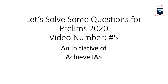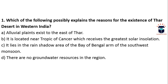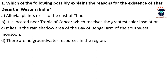Let's start the discussion. Today is video number five and we will be discussing geography questions. The first question is: which of the following possibly explains the reasons for the existence of the Thar Desert in western India? Options: A — alluvial plains exist to the east of Thar; B — it is located near the Tropic of Cancer which receives greater solar insolation; C — it lies in the rain shadow area of the Bay of Bengal arm of the southwest monsoon; D — there are no groundwater resources in the region. The most plausible reason is C.